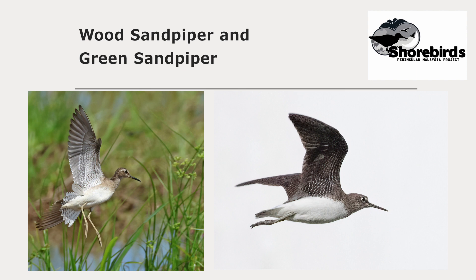One more example of how underwing pattern is important for identification: Wood Sandpiper on the left and Green Sandpiper on the right. The underwing of Wood Sandpiper is strongly barred — blackish bars on a white underwing — whereas with Green Sandpiper it's the opposite: thin white bars on a black underwing. There are many other similar species which are more easily identified in flight than on the ground, so paying attention to patterns on flying birds and which feather tracks form them will help a great deal in identifying shorebirds.